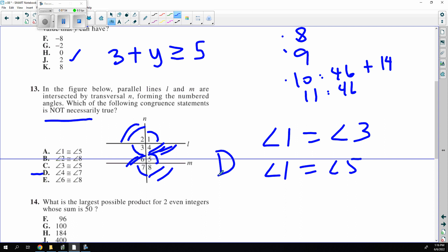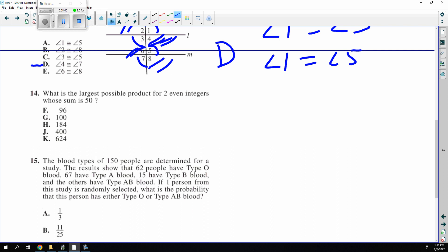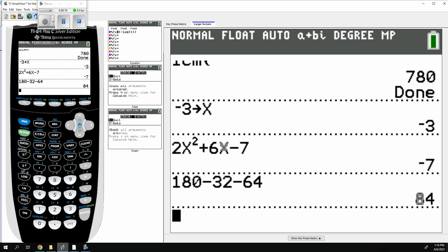This is a killer one. We need two numbers. The largest product whose sum is 50 are the closest numbers that you can get. So it would be 25 and 25. However, it has to be even numbers. So the numbers have to be 24 and 26 to make 624.